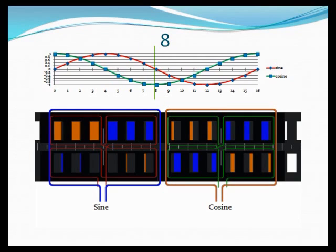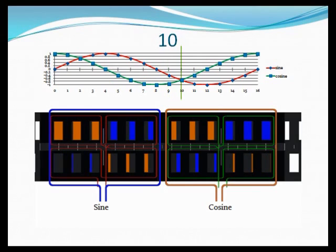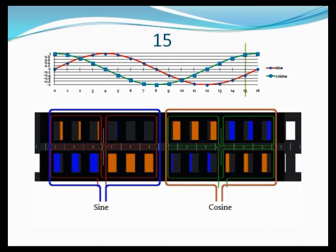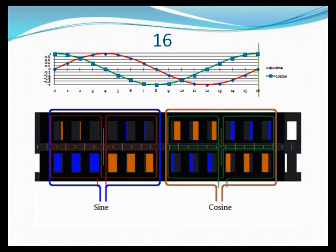We've now rotated sufficiently for the sine winding to again be balanced left to right and produce a zero output. The cosine is at a peak negative with sectors one and three at their peak versus two and four. We're now back to where we started with sine at zero and cosine at a maximum.